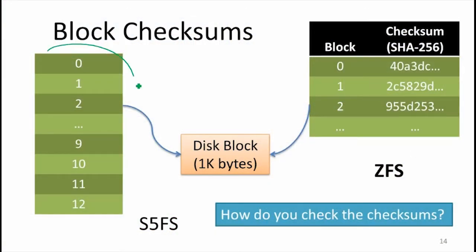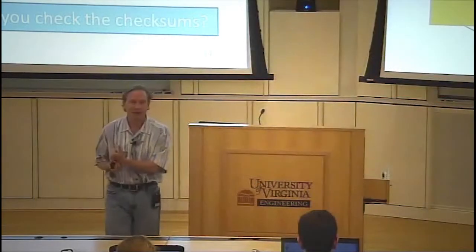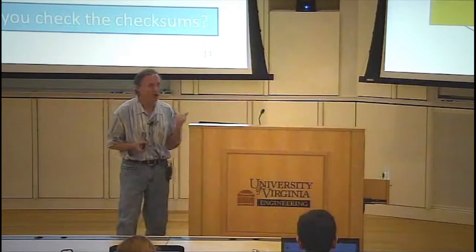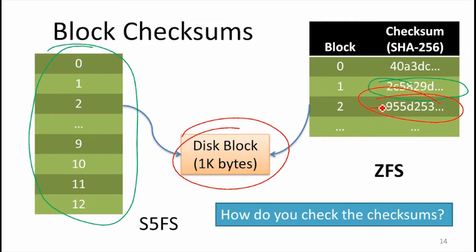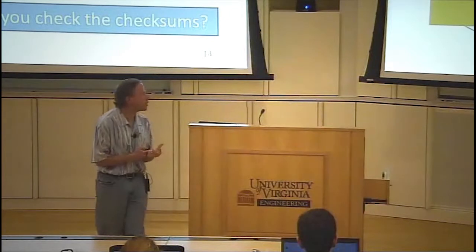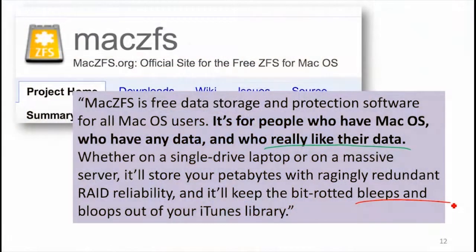Where the old Unix system just had a disk map that pointed to blocks, with ZFS we've got a disk map where for each block there's a hash — a checksum — a large, in this case 256-bit, value computed from that block. It's possible that a block could change and the checksum would be the same, but that would be highly unlikely and would be a violation of the cryptographic properties of these hash functions: it's hard, even if someone is deliberately trying to corrupt a block, to find one that hashes to the same thing. ZFS is for paranoid users — people who are really paranoid that some bits in their data might get corrupted without their knowledge.